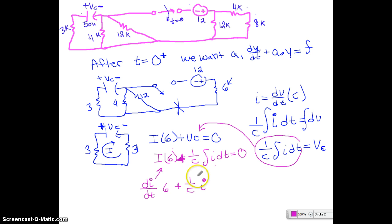So that's going to be in the form that we wanted up here at the top where we have the dy dt and then the just y by itself. And then we have equal to f which is 0. So we can see from here that our a1 is going to be 6 and our a0 is going to be 1 over c. So we have a1 divided by a0 is equal to tau which is equal to the 6 divided by 1 over c.